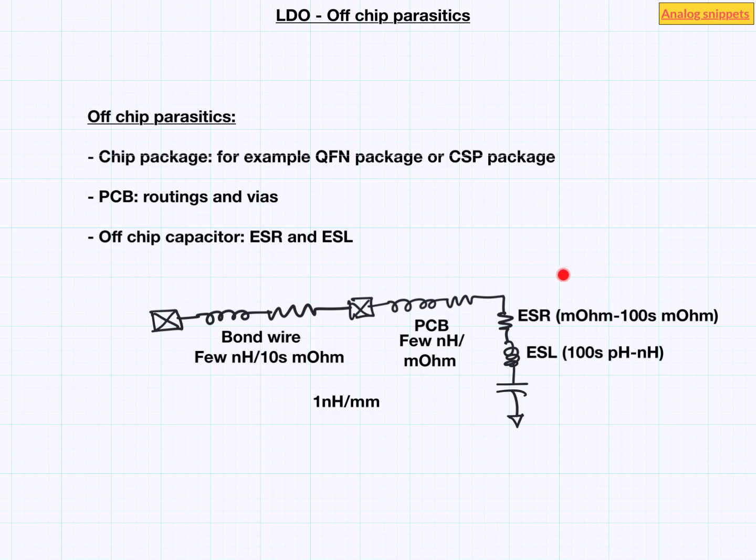Best way to find out the ESR and ESL is to consult the capacitor data sheet. Some vendors even provide the spice model for the capacitor. Best way to model the PCB track is to get the S parameter of the PCB track extracted. Lump model is often a good enough approximation for the bond wires. If you have more than one bond wire then take the mutual inductance into the account as well.